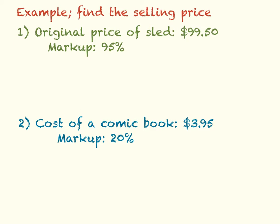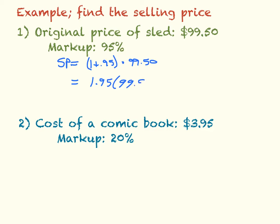For this first problem, the original price of a sled is $99.50 and the markup percentage is 95%. To find the selling price, I take 1 plus 0.95 and multiply that times 99.50. That gives me 1.95 times 99.5. When I type that into a calculator, I get a selling price of $194.03. So that would be your final answer.